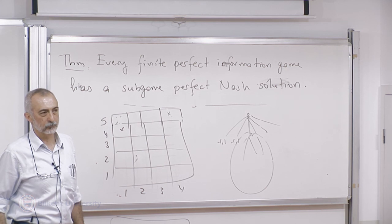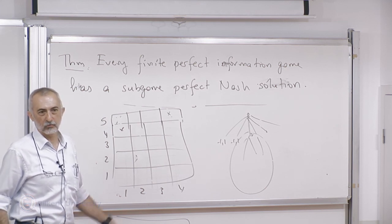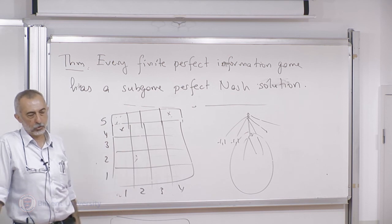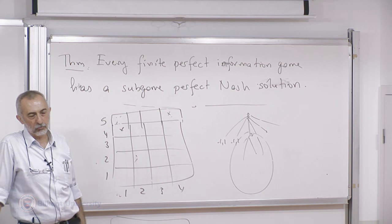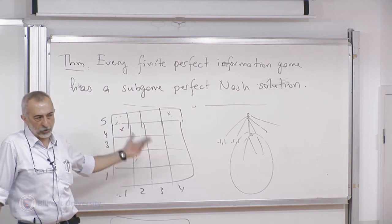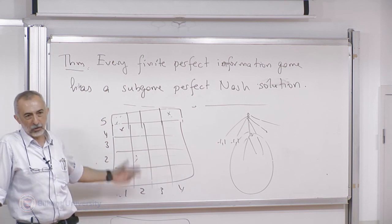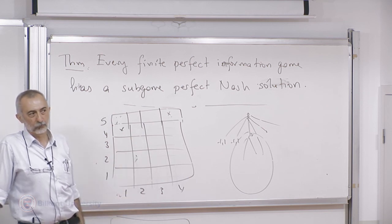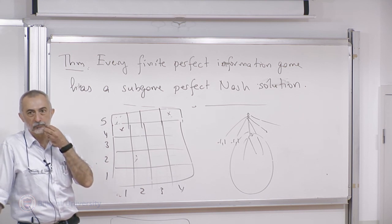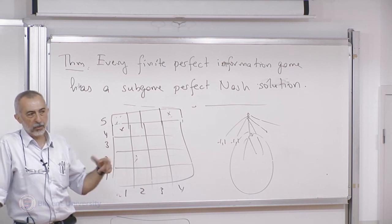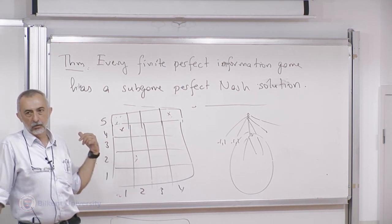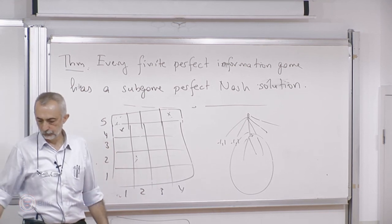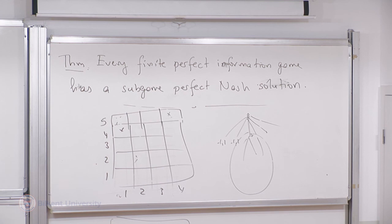Any questions? In some cases we know the game has a subgame perfect Nash solution, we have the backward induction algorithm to find it, but it's not practical. Still, existence is important. In this game, we know player one has a winning strategy, but we don't know what it is. Let's take a break. After the break, we'll look into the Stackelberg model, and then subgame perfect Nash solutions of games that are not perfect information.